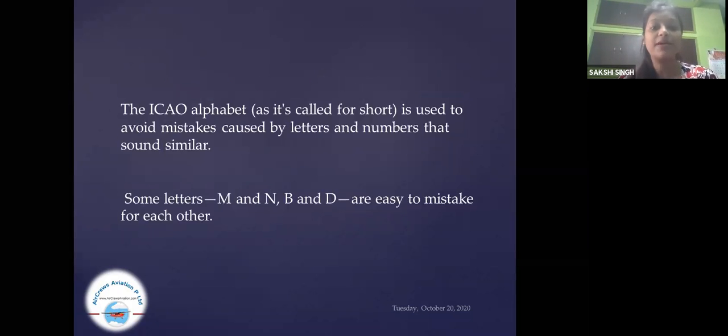The ICAO alphabet, as it is called for short, is used to avoid mistakes caused by letters and numbers that sound similar. Some letters, you may take an example of that M and N, B and D are easy to mistake for each other.